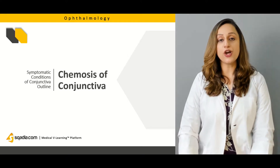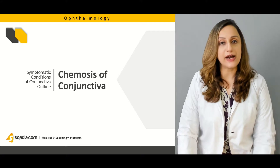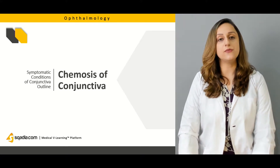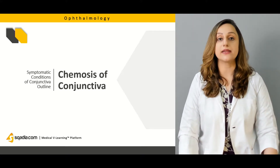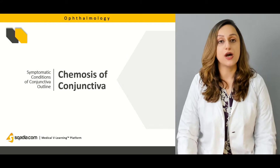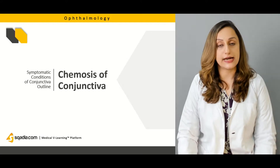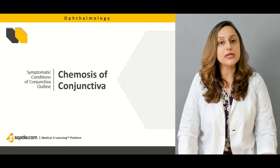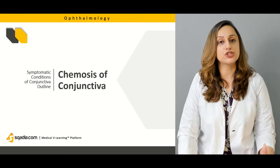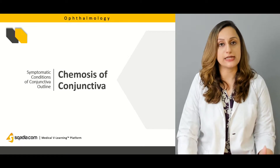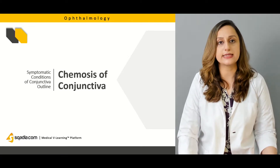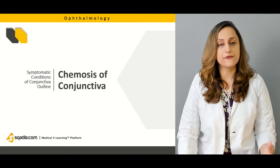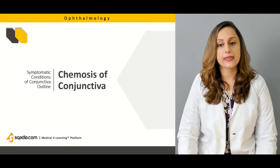Moving on, we'll be discussing the chemotic factors of the conjunctiva. Chemosis is basically the edematous condition of the conjunctiva, as well as it can be the inflammatory condition of the conjunctiva or any ongoing processes that result in inflammation of the conjunctiva.